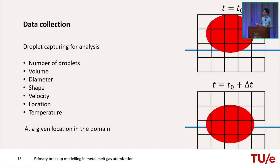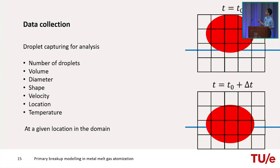For data collection, we want to capture droplets in the VOF field to analyze their number and per-droplet properties such as volume, diameter, shape, velocity, location, and temperature — to feed into secondary breakup modelling. Droplets are captured at a given plane in the domain: cells with volume fraction larger than zero are connected in space, and those belonging to the same droplet are identified by adjacency. Their volumes are summed to get the droplet volume.